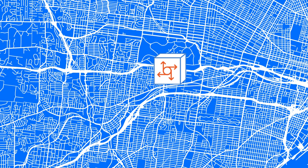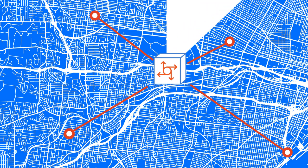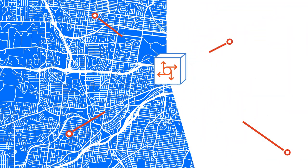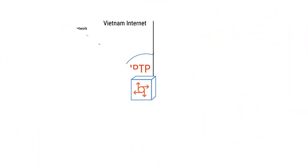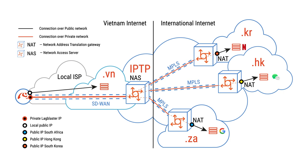For example, within the city of Ho Chi Minh, a Lag Blaster user using VNPT internet loses only 2 or 3 milliseconds to reach the network access server. After reaching the access server via domestic internet, the user's traffic will be fully carried on IPTP MPLS backbones to other countries and regions.